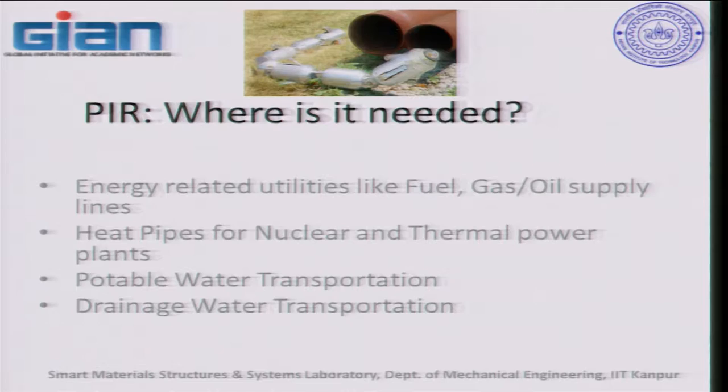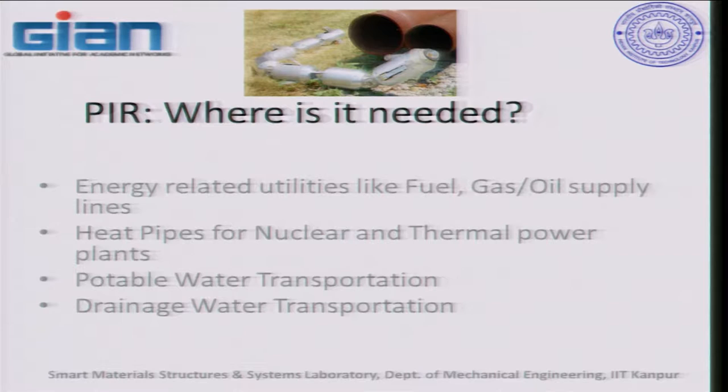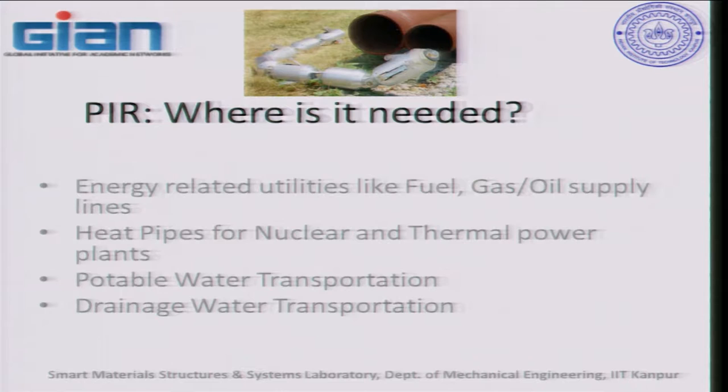The places where pipeline inspection robots (PIR) are used include energy-related utilities like fuel, gas or oil supply lines and heat pipes for nuclear and thermal power plants, portable water transportation, and drainage water transportation. These are the four most important areas of application. Professor Ogai has already talked about drainage water transportation, and I am going to talk about energy-related utilities like fuel, gas, or oil supply lines.